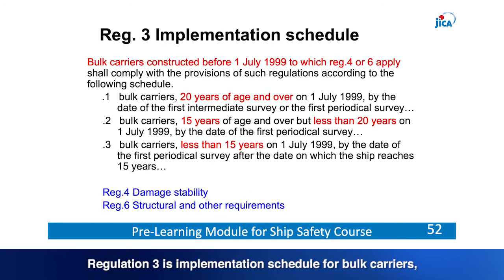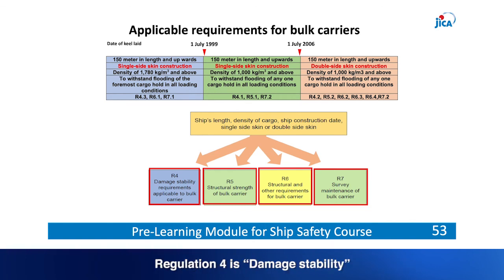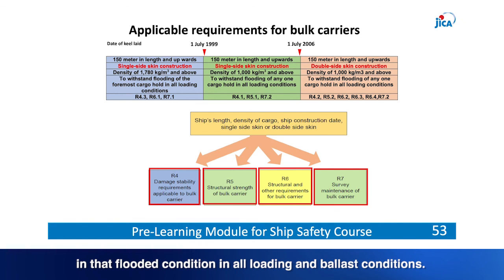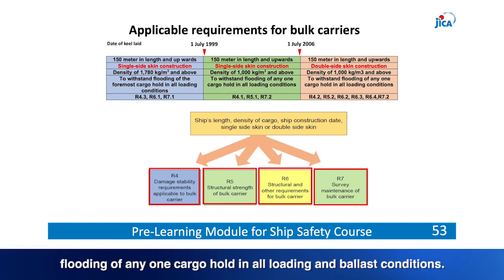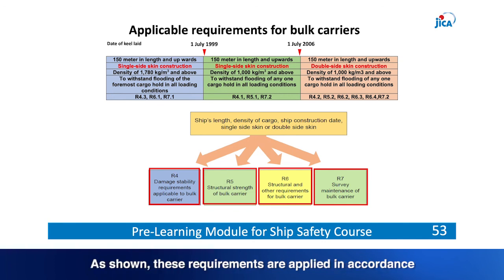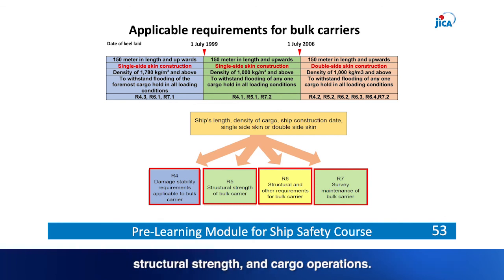Regulation 3 is the implementation schedule for bulk carriers coordinated according to the age of ships. Regulation 4 is damage stability. Regulation 5 covers structural strength to withstand flooding of any one cargo hold to the water level outside the ship in all loading and ballast conditions. Regulation 6 covers structural and other requirements. Regulation 7 is survey and maintenance. These requirements are applied in accordance with the date the ship's keel is laid, the ship's length and the density of cargo, with enhanced criteria for damage stability, structural strength and cargo operations.